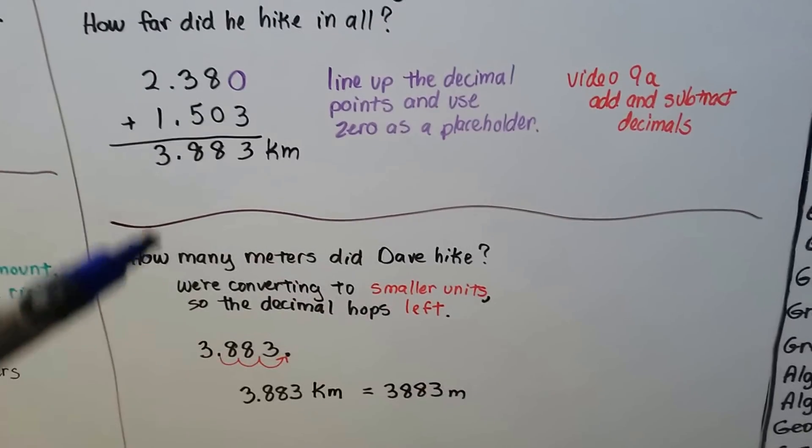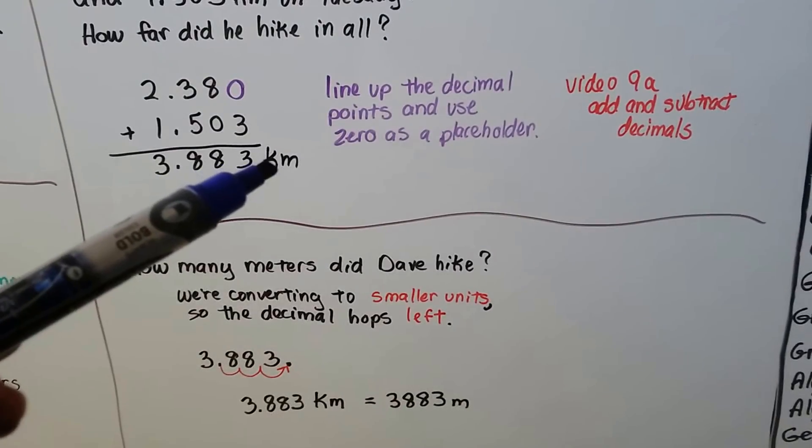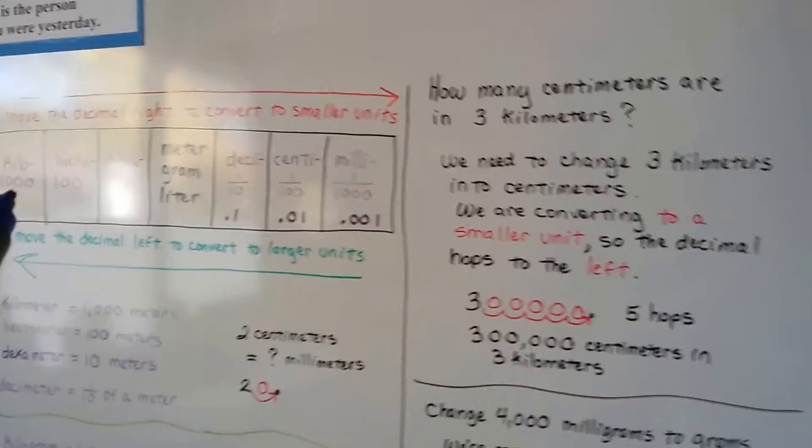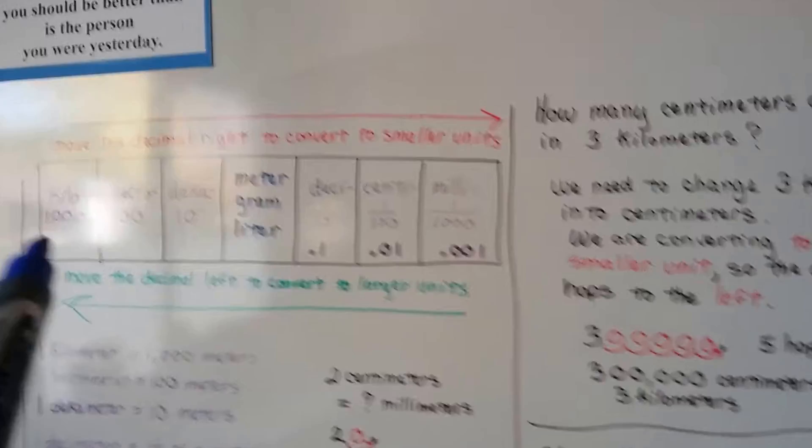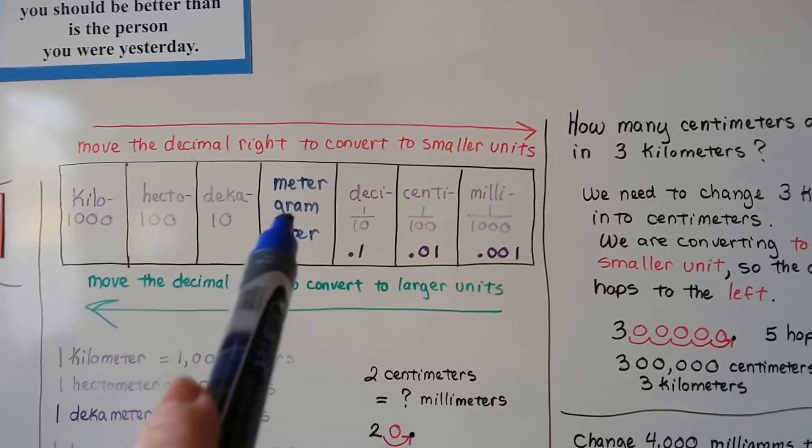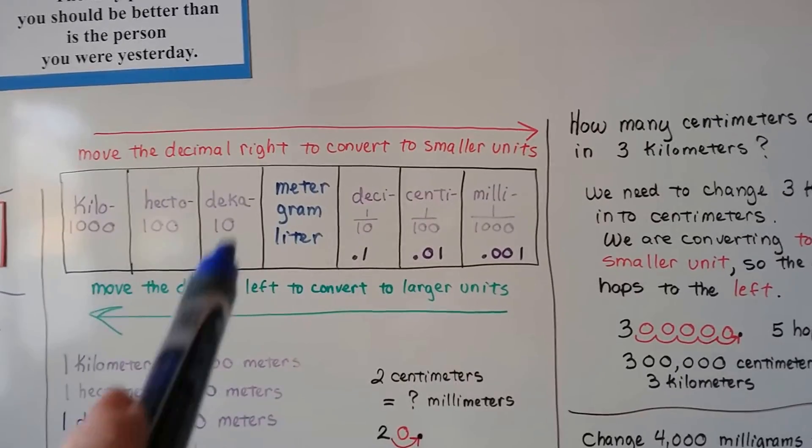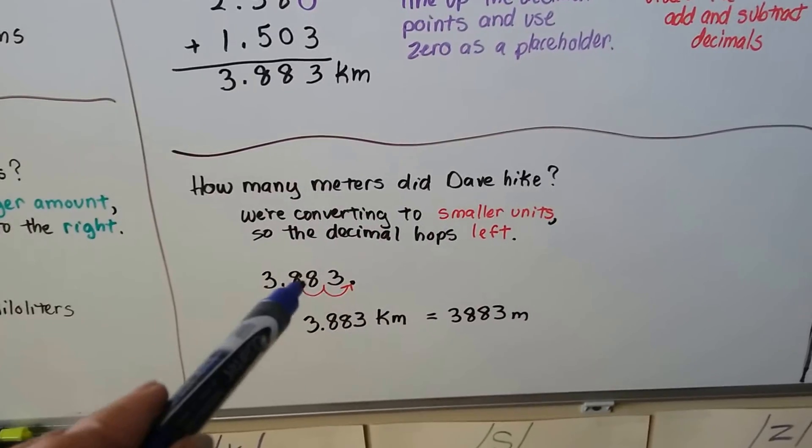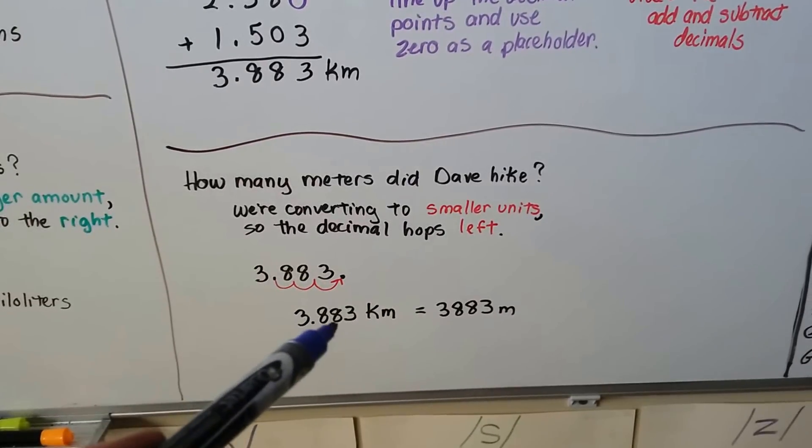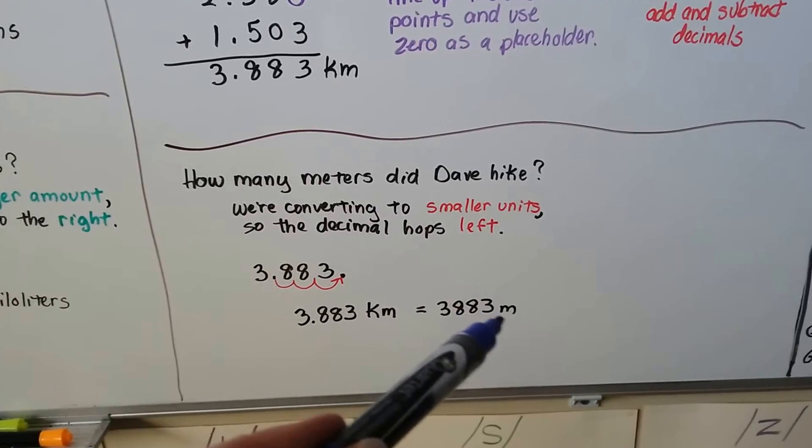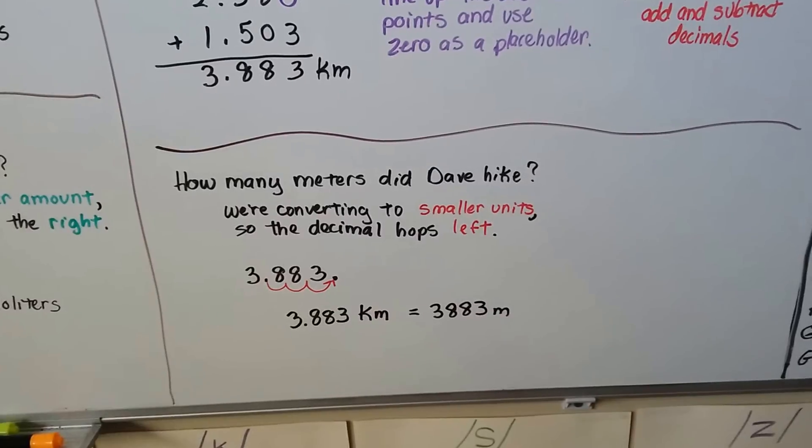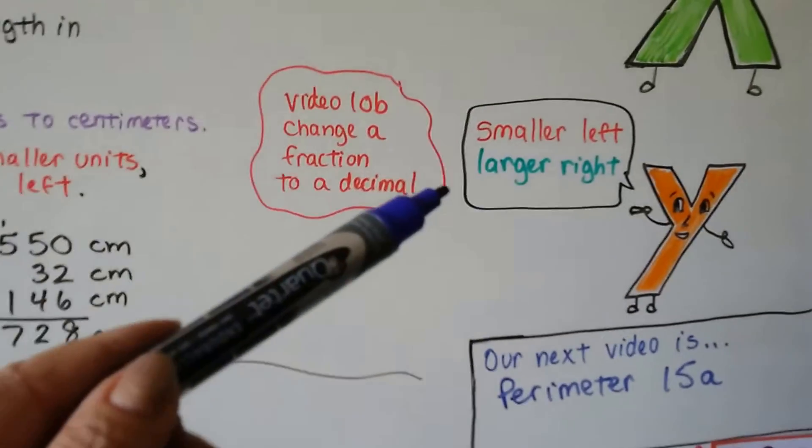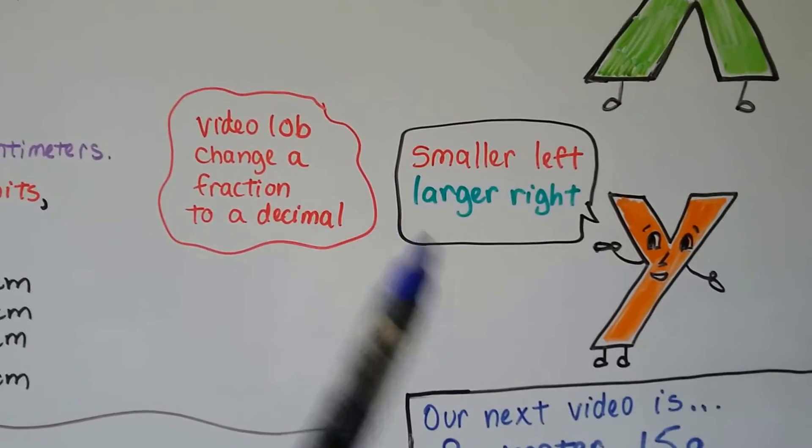How many meters did Dave hike? Well, he hiked 3.883 kilometers. How many meters is that? And the kilometers is way over here. The kilometers is way over here at the end and we need to change it to meters. So we're going smaller by one, two, three hops. So this is how many kilometers he walked. We need to hop that decimal place three hops to the left. One, two, three. So the 3.883 kilometers is equal to 3,883 meters. Just remember to go to a smaller unit, you go to the left. To go to a larger unit, you go to the right.